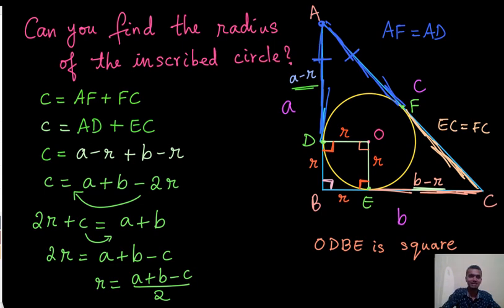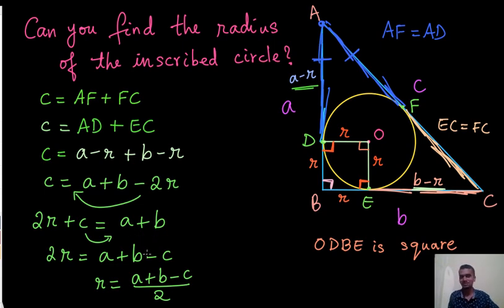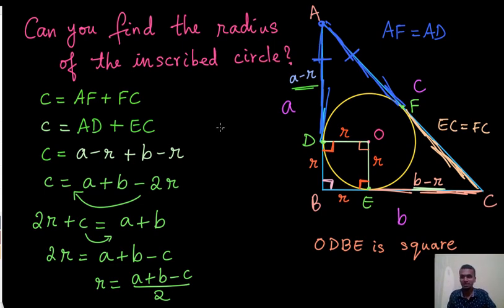That's a very neat expression for the radius in terms of the side lengths of the triangle. We had the side lengths as input, and we've now obtained an expression for the radius. This is one method to find the radius — there is another interesting method that is a bit lengthier, which I'll cover in another video. Until then, keep watching for such interesting problems. Take care, see you in the next video.